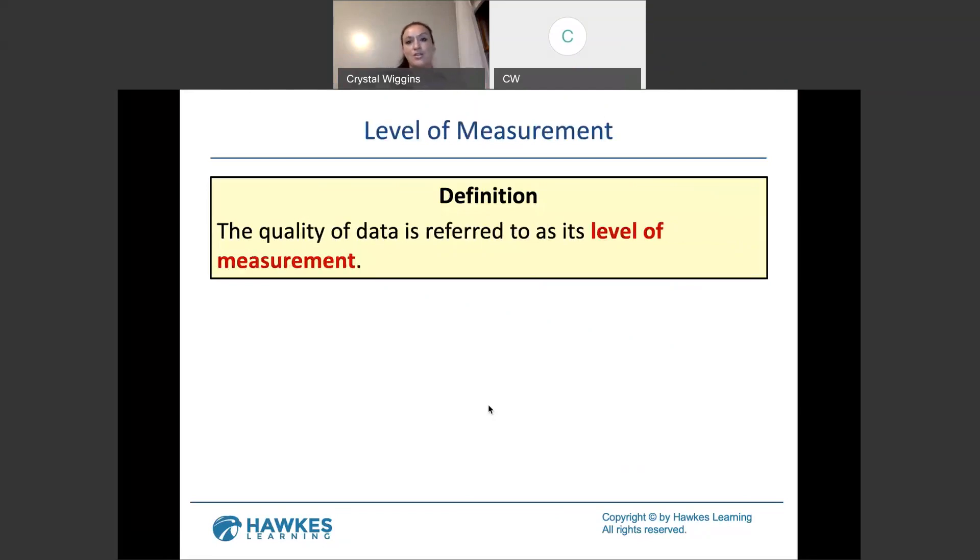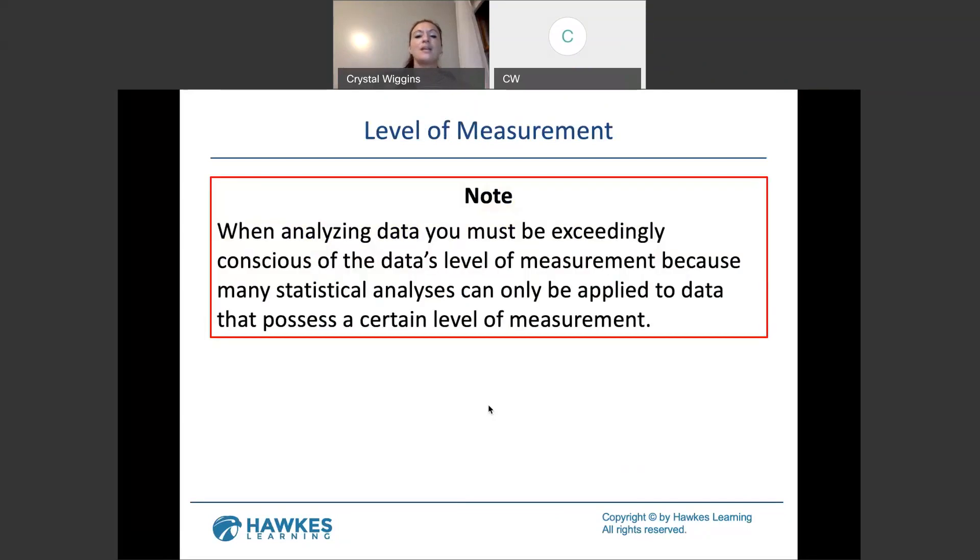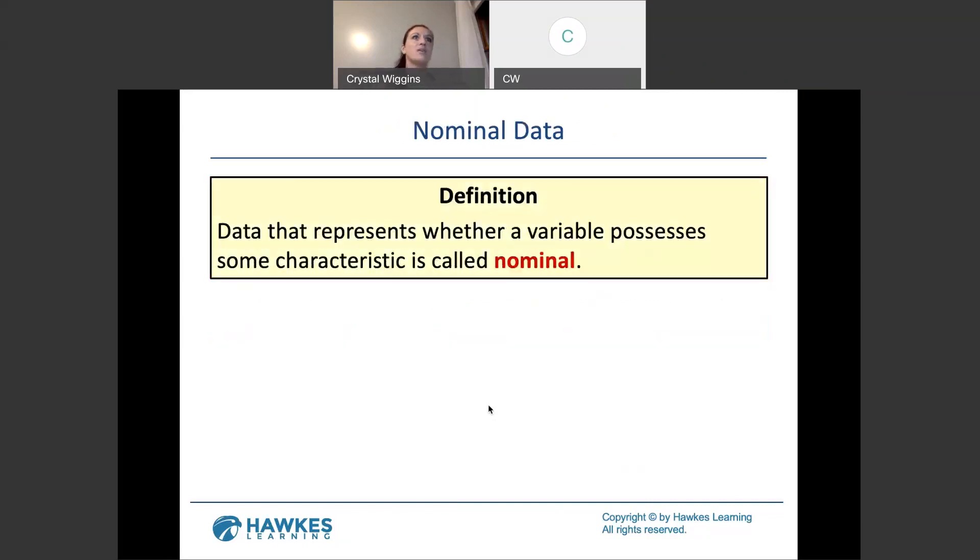There are different levels of measurement. There are four levels of measurement. The very basic level is the nominal level. That is the very most basic level of measurement and that includes categories, labels, anything that doesn't have a specific meaningful order to it. Colors, technically you'd be like, well the rainbow has an order to the colors, but that's not a meaningful order. Like if I was talking about a list of Netflix shows, that's nominal data.